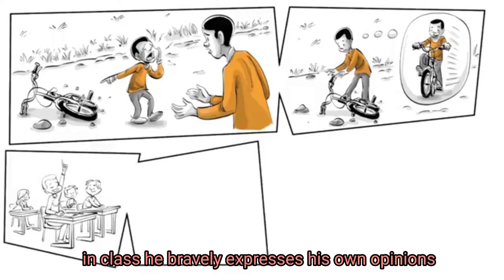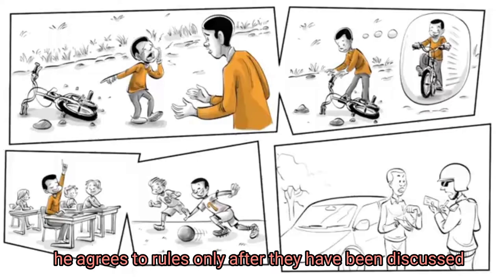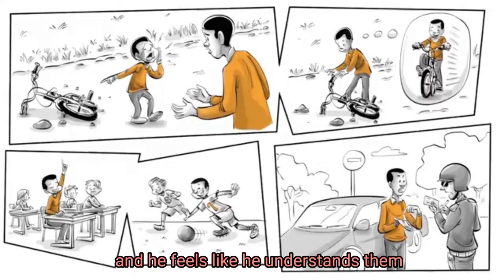In class, he bravely expresses his own opinions in an appropriate manner. During breaks, he can show his emotions and act freely. As an adult, he agrees to rules only after they have been discussed and he feels like he understands them.